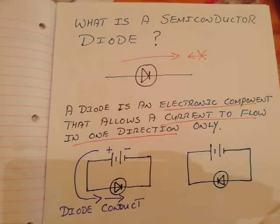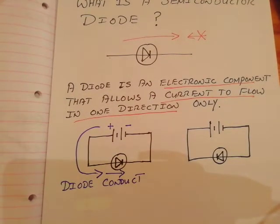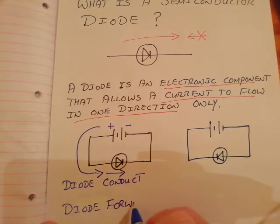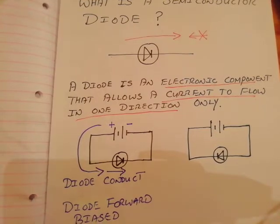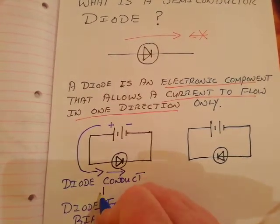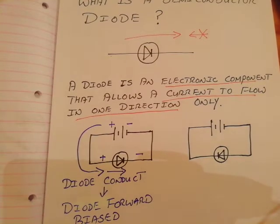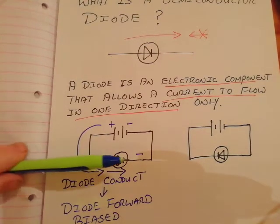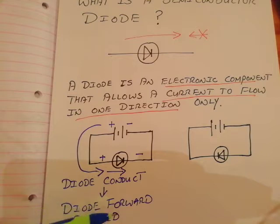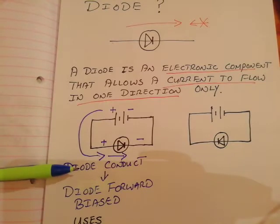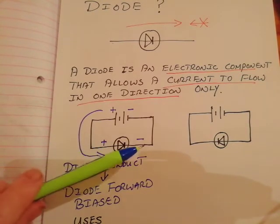Conduct means allowing electric current to flow through it. When a diode conducts, it is said to be forward biased. That simply means one end is plus and one end is minus in such a way that a current can flow through it. When you hear about a diode being forward biased, it simply means the diode conducts electric current — that end has to be plus and that end has to be minus.